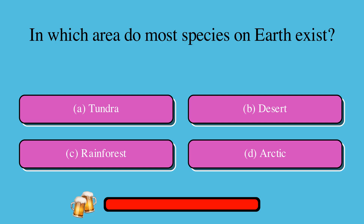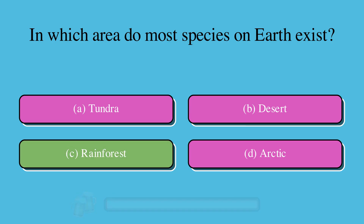In which area do most species on Earth exist? A. Tundra, B. Desert, C. Rainforest, or D. Arctic? The correct answer is C. Rainforest.